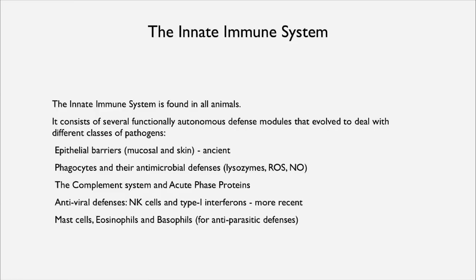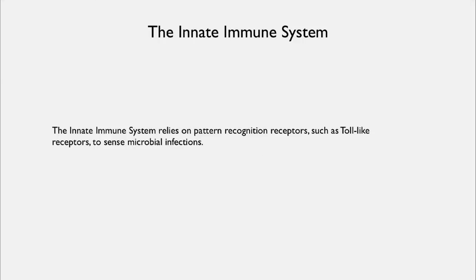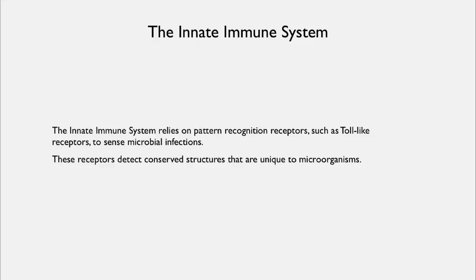There are also mast cells, eosinophils, and basophils — these are anti-parasitic defenses, recruited when things like worms invade our bodies. This is a system that relies on recognizing patterns, so it is looking for molecules that are characteristic of pathogens and not characteristic of self. These recognition systems are toll-like receptors — the ancient method of looking quite specifically for something non-self and reacting to it. They detect conserved structures unique to microorganisms and activate inflammatory and antimicrobial defenses.